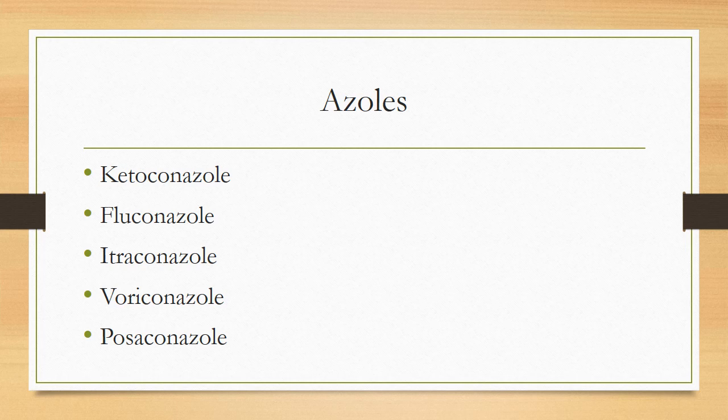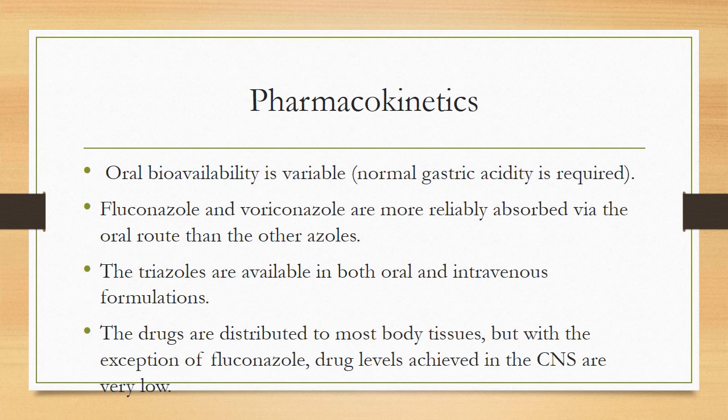The azoles group includes ketoconazole, fluconazole, itraconazole, voriconazole, and posaconazole. Pharmacokinetics: oral bioavailability is variable; normal gastric acidity is required for absorption. Fluconazole and voriconazole are more reliably absorbed by the oral route. The triazoles are available in both oral and IV formulations.